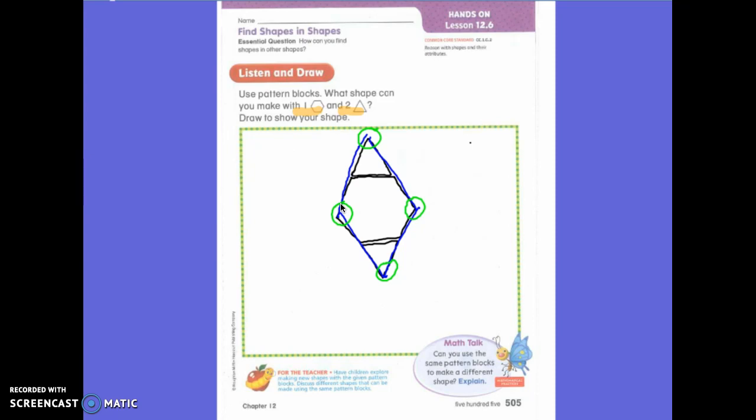Okay, so if you had this shape and maybe it did this, then let's see how many sides and vertices. One, two, three, four, five, six. So is that different? Yeah, it is.